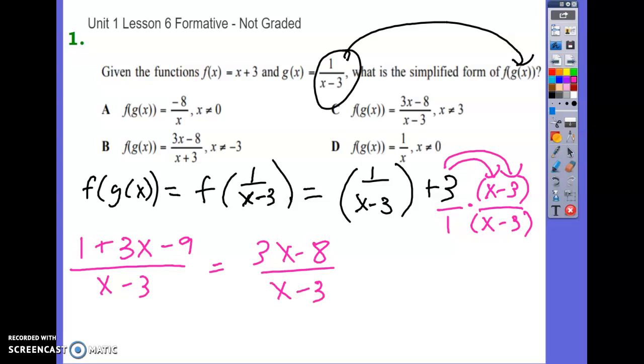Now, when we input this function, first thing we can tell is x cannot be equal to three because if x is three, then our denominator will end up being zero, and that's going to be an undefined value. So the answer to number one is C. It cannot be equal to three.